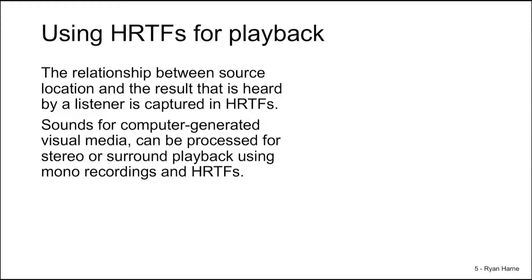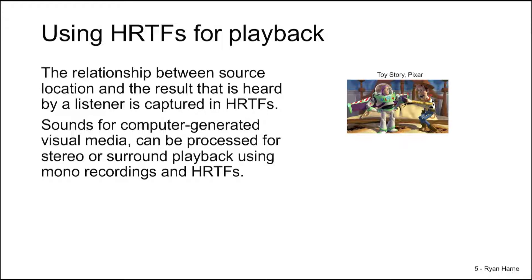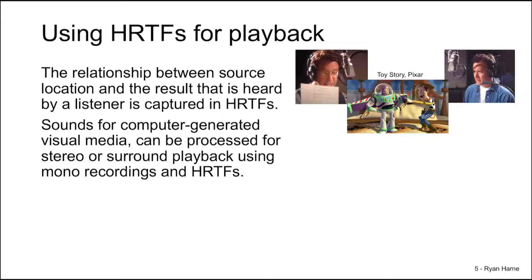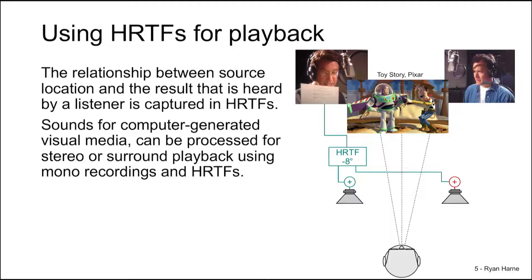Let's use, for instance, the Toy Story Pixar movie. In a recording studio, Tim Allen would have voiced for Buzz Lightyear, whereas Tom Hanks was recording mono audio for Woody. To create the spatial effect for this scene, we see that Buzz Lightyear is slightly off-center to the left. So for Tim Allen's mono recording, this would have been transmitted to an HRTF with approximately a minus 8 degrees azimuthal angle dependence, and that would have been pumped then to the left speaker and to the right speaker.